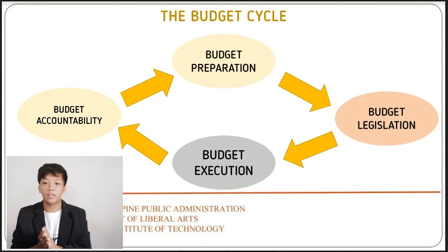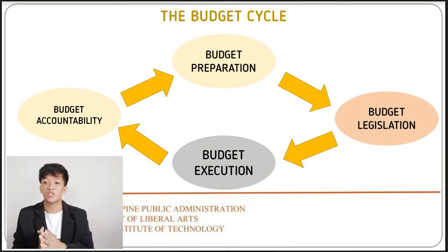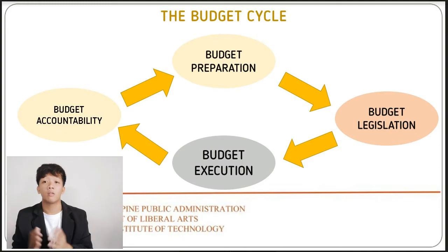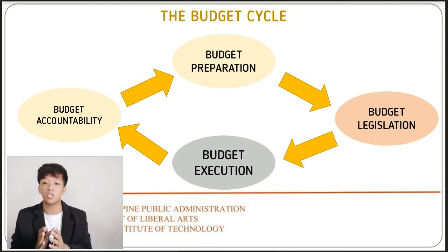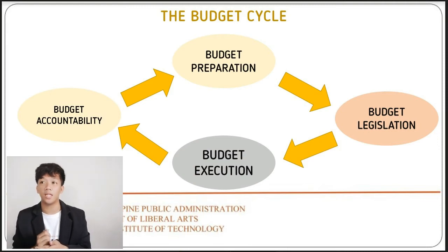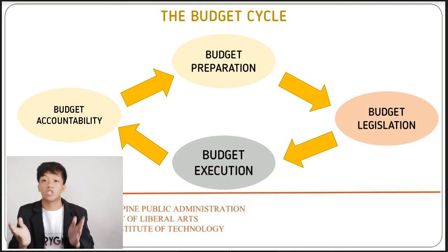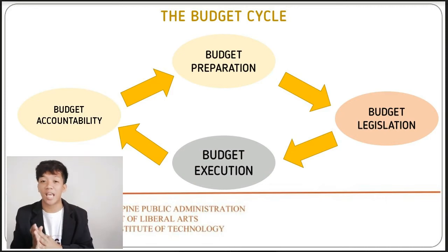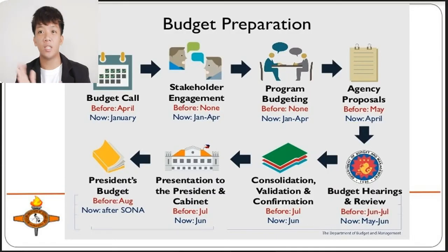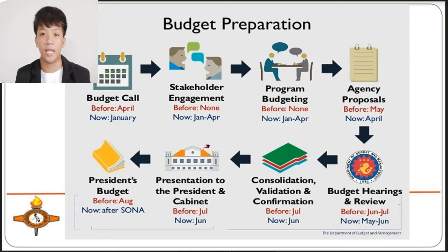Budgeting for the national government involves four distinct phases: budget preparation, budget legislation or authorization, budget execution or implementation, and lastly, budget accountability. While they are distinctly separate, these processes overlap in implementation during a budget year. Budget preparation for the next year proceeds as government agencies are executing the current year's budget, while the state is simultaneously engaged in budget accountability, reviewing the past year's budget.